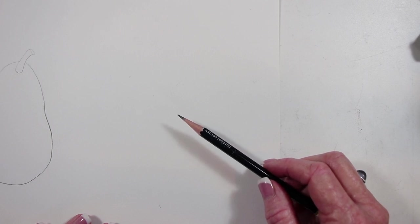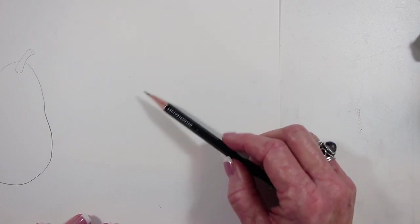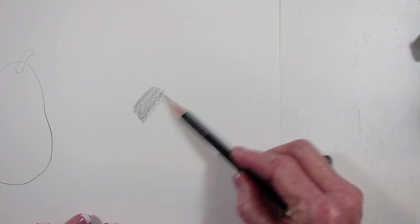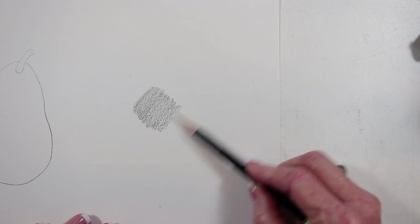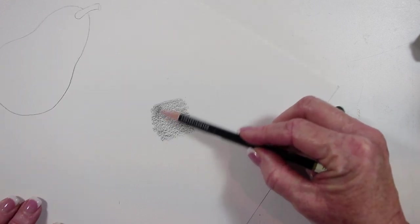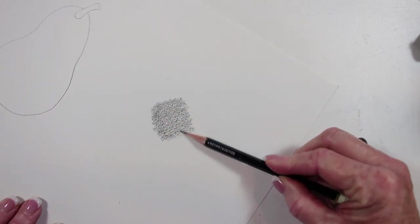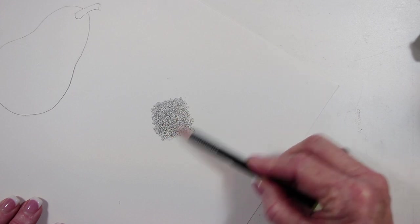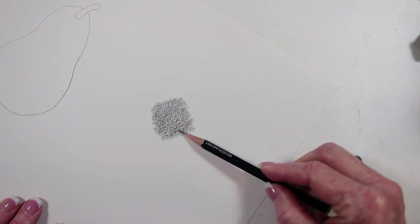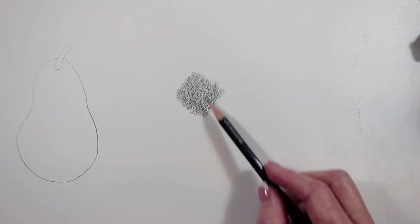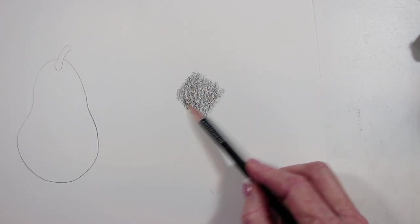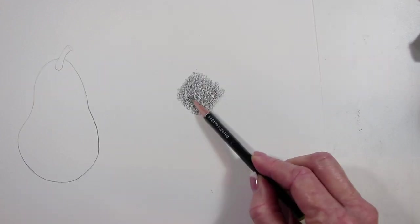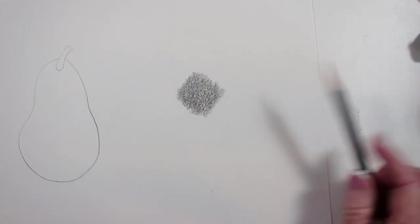Another way that I really like to use the kneaded eraser is to lift up areas of tone that have gone too dark. So for instance, if I come in with the side of my pencil and I'm going to work in an area that I want to get dark, but let's say after I've laid this ground down, I've decided that it's too dark. I wanted it to be lighter than this, but in order to cancel out some of the texture of the paper and fill in a lot of the hills and valleys, I had to go darker.